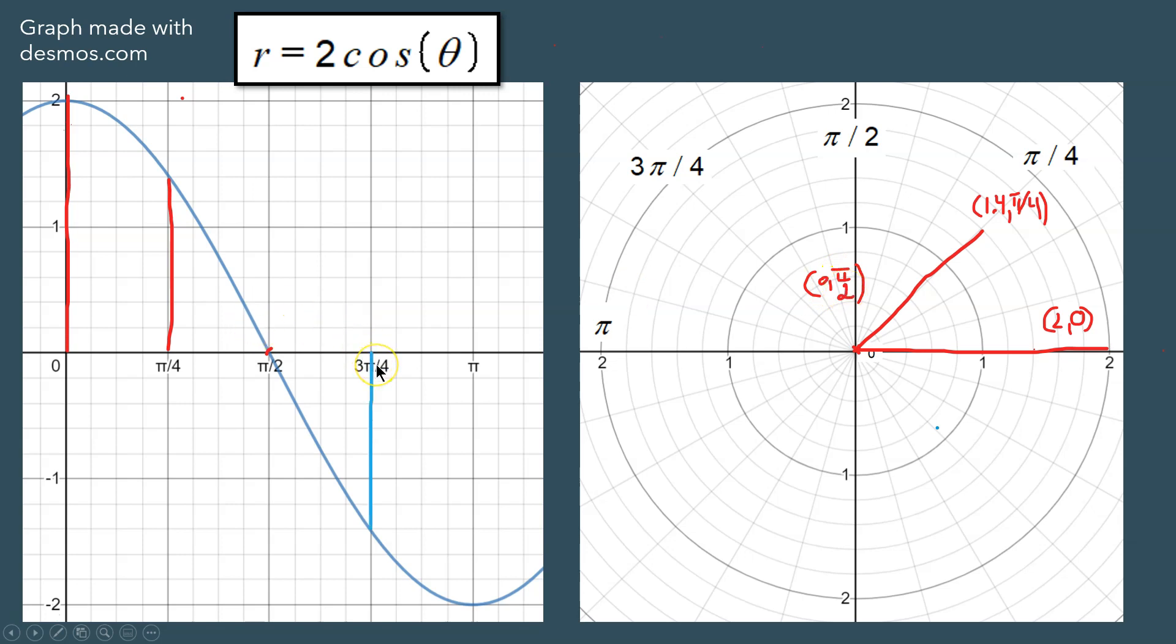Back on the left side, at 3 pi over 4, now you have to be careful because the angle is positive, but r, because it's going below the x-axis here, below the horizontal axis, is negative. So for a second, back on the right side, you might draw this as the segment that goes up to 3 pi over 4. However,